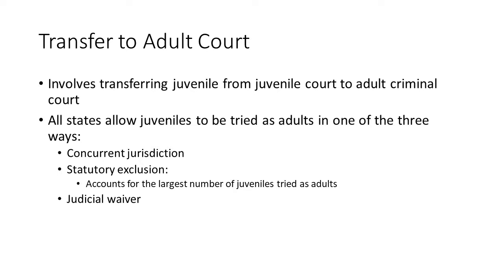The use of waiver to adult court is a relatively rare event. Less than 1% of all cases formally processed in juvenile court are waived to adult court for prosecution — that is, less than 10 out of every 1,000 cases. All states allow certain juvenile offenders to be waived to adult court. There are three types, and they differ primarily by who makes the decision to try a juvenile in adult court.